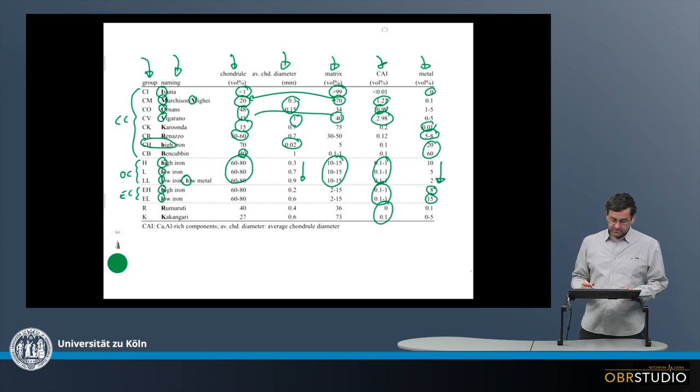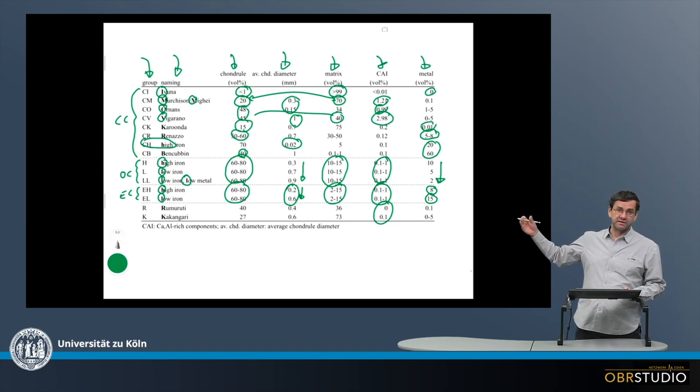Then we go to the enstatite chondrites. They have quite similar chondrule abundances and matrix abundances as the ordinary chondrites, and there's also differences in the chondrule sizes here between EH and EL. Again, the EL have slightly larger chondrules.